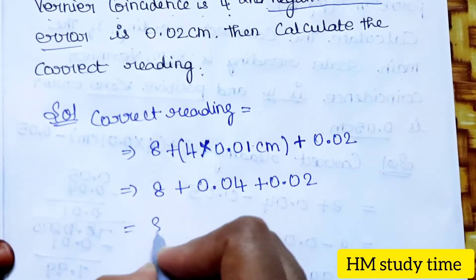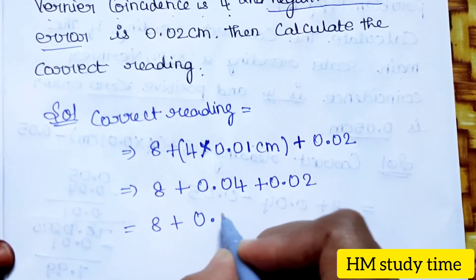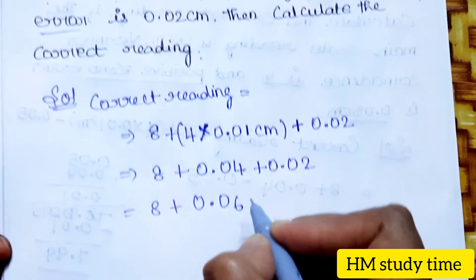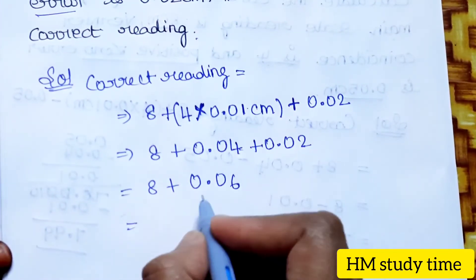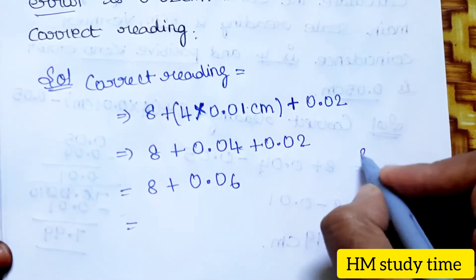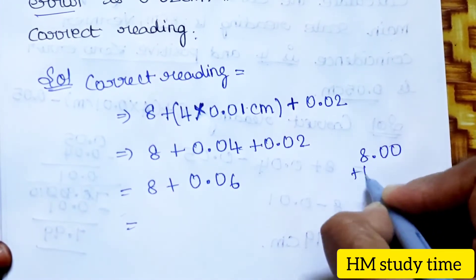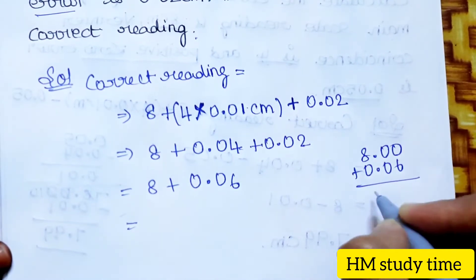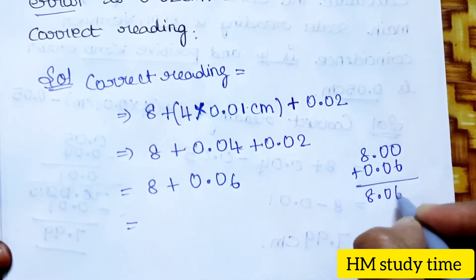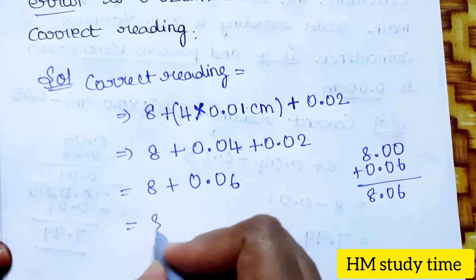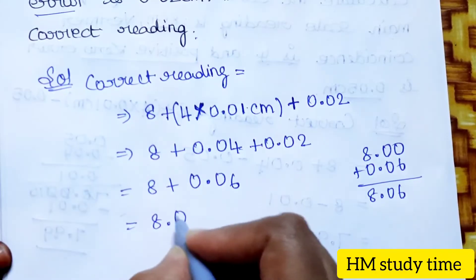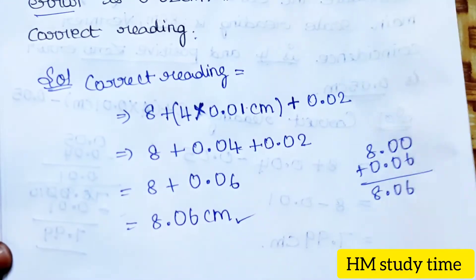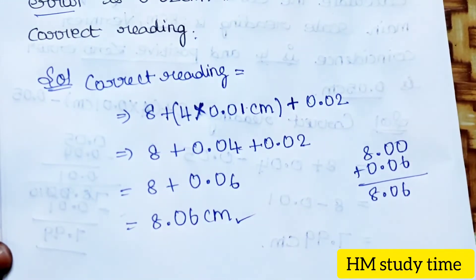Continuing: 8 plus 0.04 plus 0.02 equals 8.00 plus 0.06. So the answer is 8.06 cm. This is the correct reading. Now, problem 3.